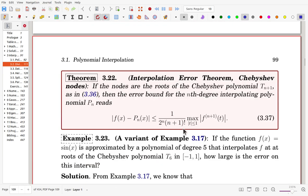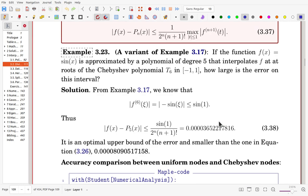So if we are free to choose points for interpolation, then we can choose the Chebyshev nodes. Here, interpolation error theorem with Chebyshev nodes: If the nodes are the roots of the Chebyshev polynomial Tn+1, then the error bound for the nth degree interpolation polynomial Pn is with this one. So for the product, now we can choose 1 over 2 to the n, and the remaining part is the same as earlier.